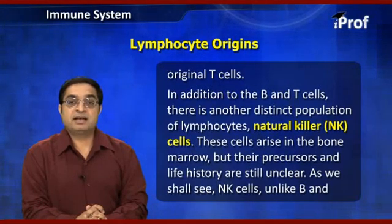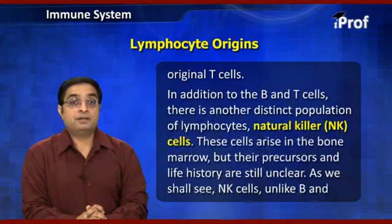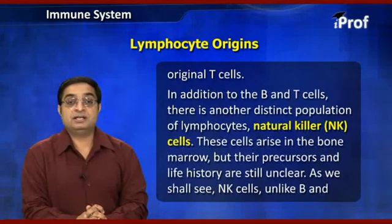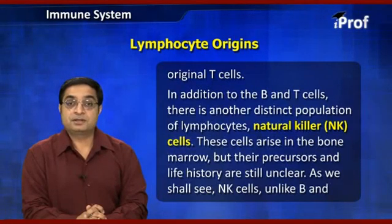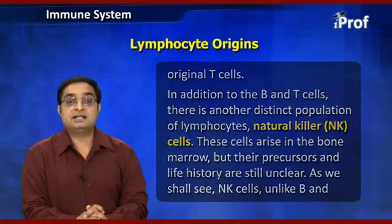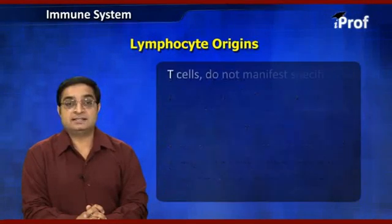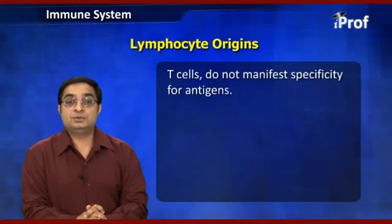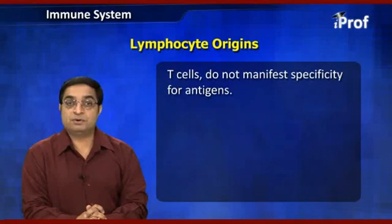Natural killer cells arise in the bone marrow, but their precursors and life history are still unclear. Unlike B and T cells, natural killer cells do not manifest specificity for antigens.